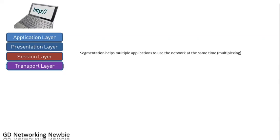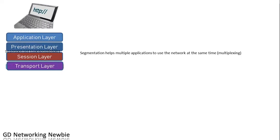Hi everyone. Today we are going to discuss the header field of the TCP segment. Whenever we use any application program like email or a web page, that application program generates data, which is handed over to the transport layer after being converted into binary form — zeros and ones. The application program continuously generates data and hands it over to the transport layer using the presentation and session layers.